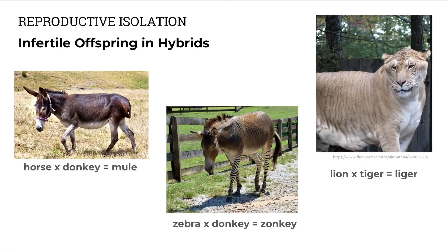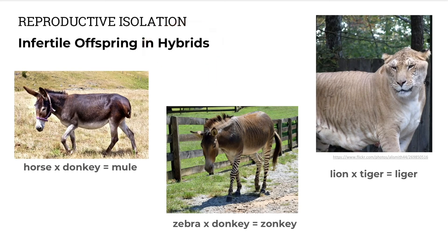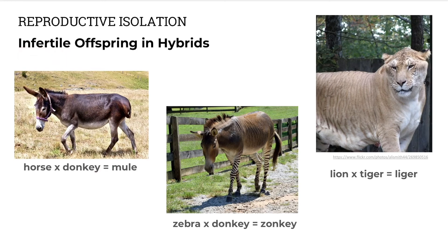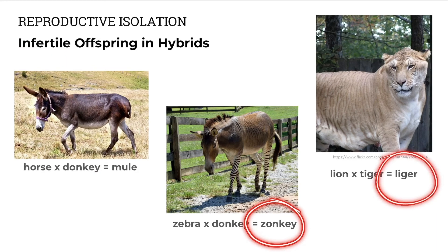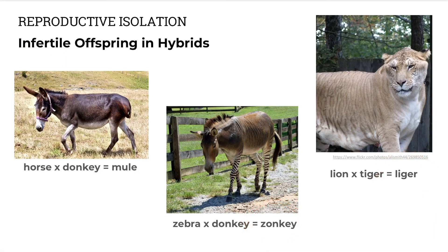Some species are able to mate and produce offspring — we call these offspring hybrids. For example, the horse can mate with a donkey and they produce a mule, but it's infertile. Another infertile hybrid is a zonkey or a liger.